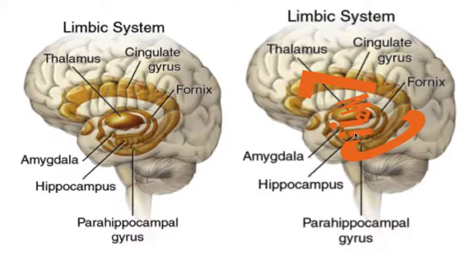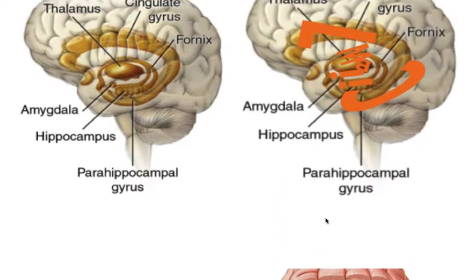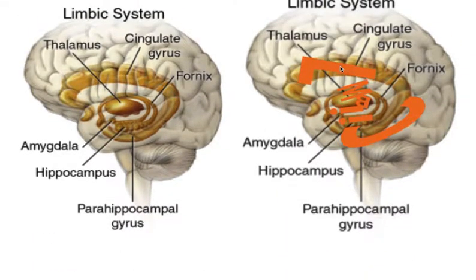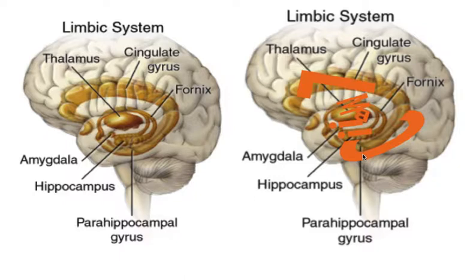The B represents the thalamus — if you include both sides, it is somewhat B-shaped. Just a reminder: the cingulate gyrus is a bilateral structure, as are really all of these. In this mnemonic, the B represents two thalami and the M represents two fornices. Hopefully this helped — hit like if it did, thanks for watching, subscribe if you can, cheers!